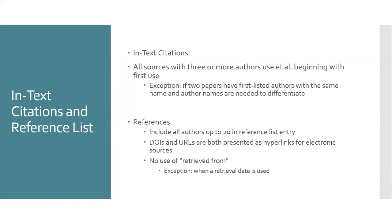All sources with three or more authors must use et al. at the beginning, with the first use. Instead of 'Smith, Jones, and Baxter,' you write 'Smith et al.' There is one exception: if two papers have the same first author but different second, third, fourth, and fifth authors, you will need to write out the author names to help differentiate them — for example, 'Smith, Jones, and Baxter (2012)' versus 'Smith, Johnson, and Friedman (2012).'